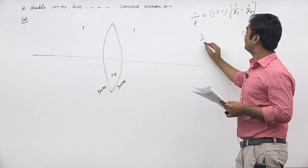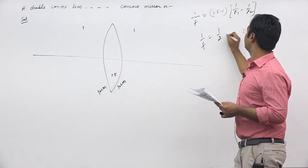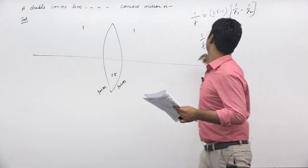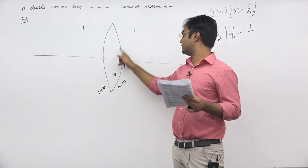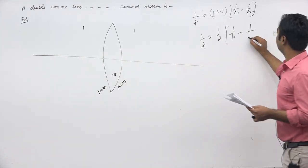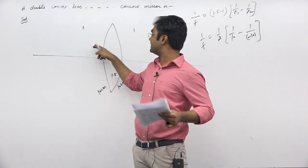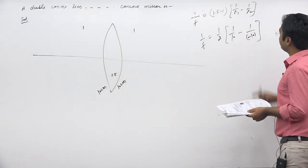Now, 1 by f is equal to 1 by 2. Let's go from here. This is plus 1 by 10, then minus 1 upon minus 10. So if this is a convex boundary then plus, and concave boundary then minus.